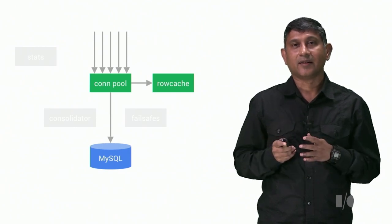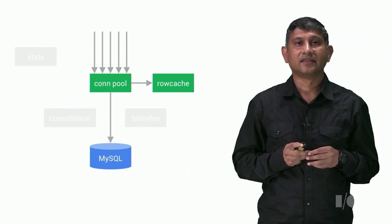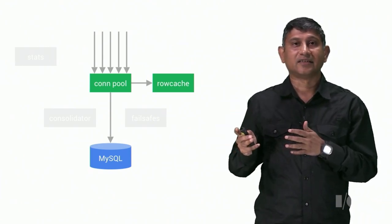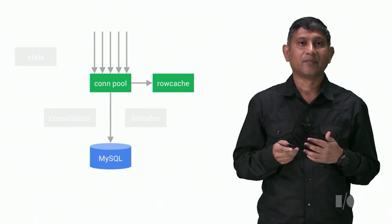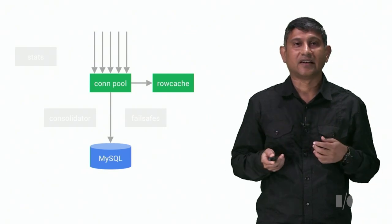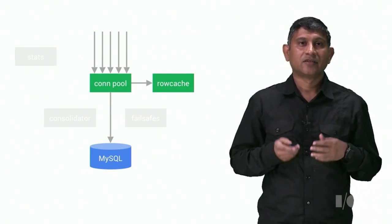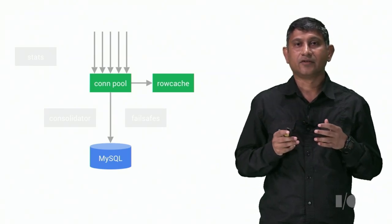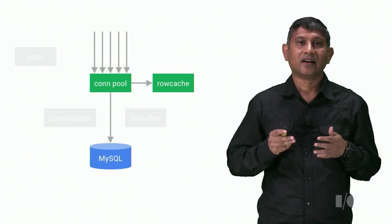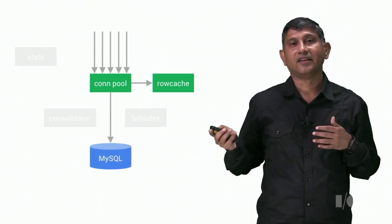The second thing that VTTablet does is to have its own cache, also known as the row cache. See, MySQL's buffer cache works well for full table scans because it reads data in blocks. But this is not very efficient for random access reads that fetch one row at a time, which are typical of mobile and web apps. So what VTTablet does is to store such rows in its own cache. And any subsequent reads are first checked with VTTablet's row cache before deciding to send the query to MySQL.